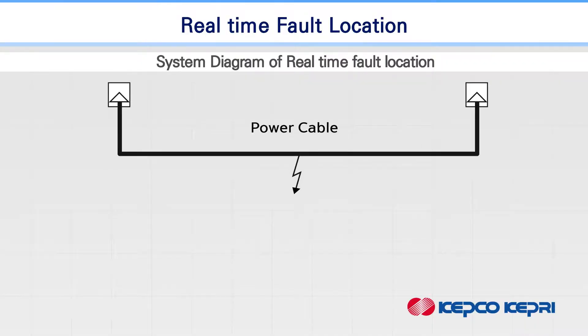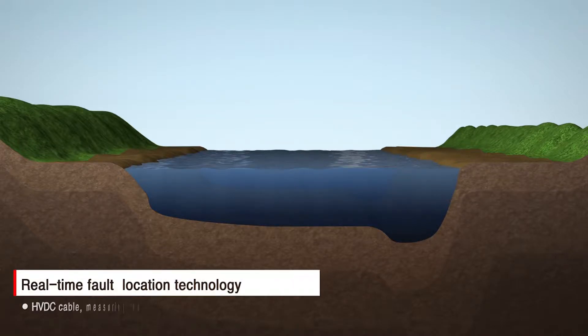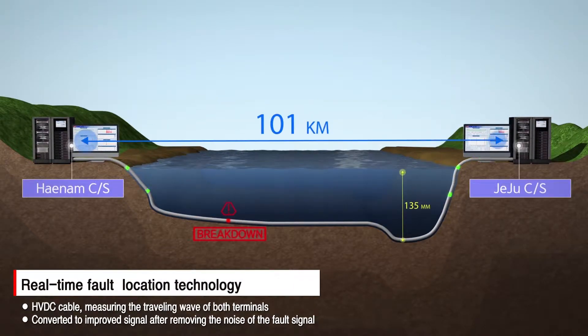First, real-time fault location technology is an innovative detection technology using wavelet transform. Surge traveling waves occurred in HVDC cable are measured at both terminals respectively, and the measured complicated fault signal is converted to simple signal without noise through self-developed algorithm process. The fault location is finally calculated with improved accuracy.